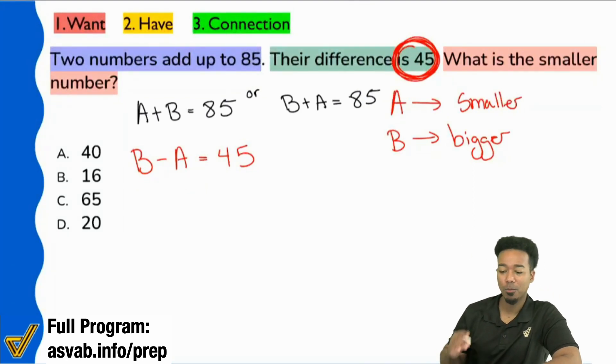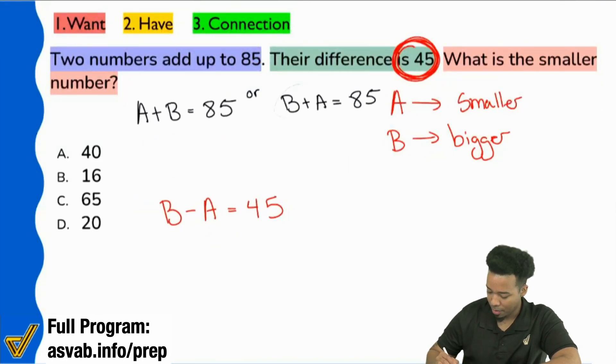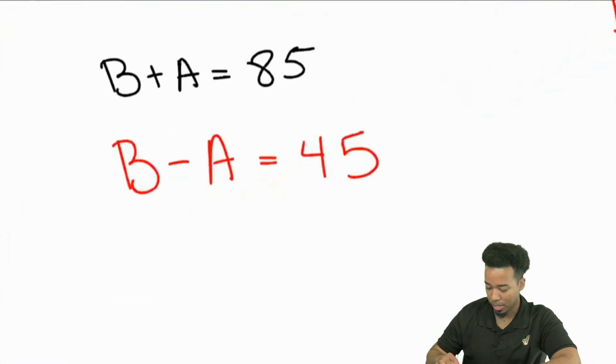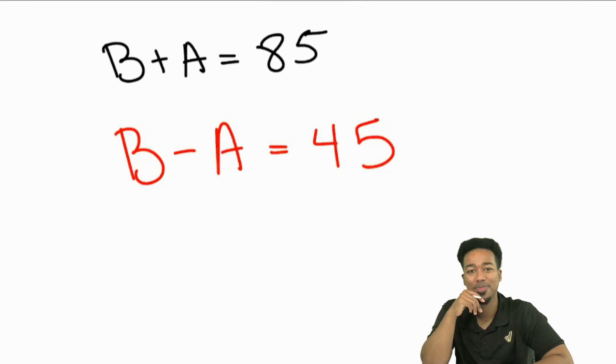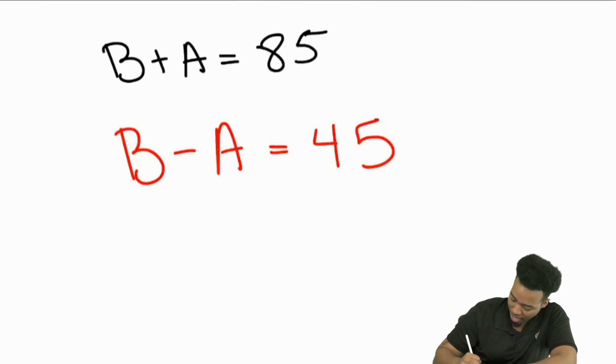Let's try to solve for A, the smaller number. What do you notice? If I move this equation right over here, my variables are already lined up. The B is above the B, the A is above the A. What do we notice we can do if we add these equations together? We'll cancel out A.